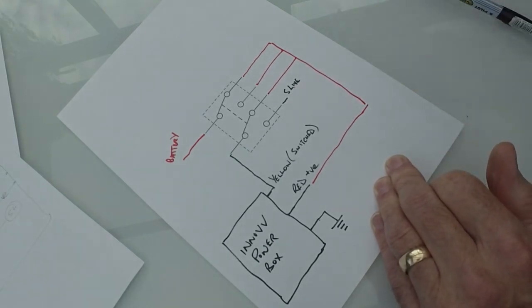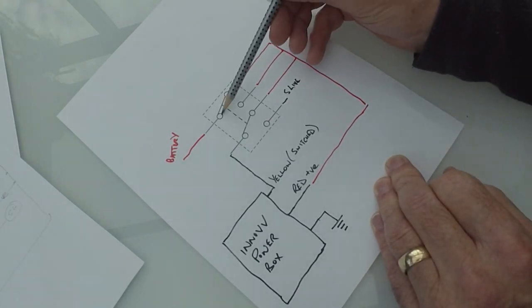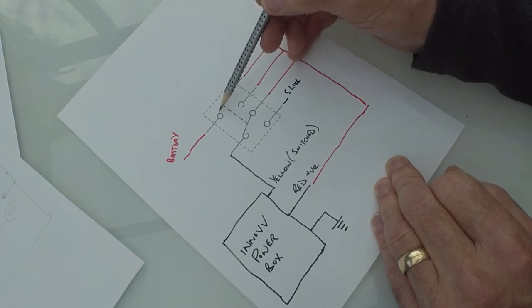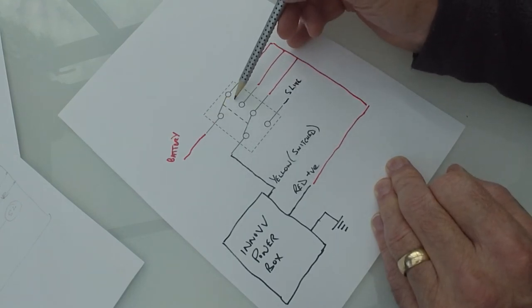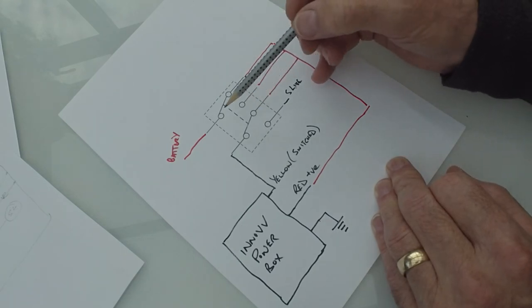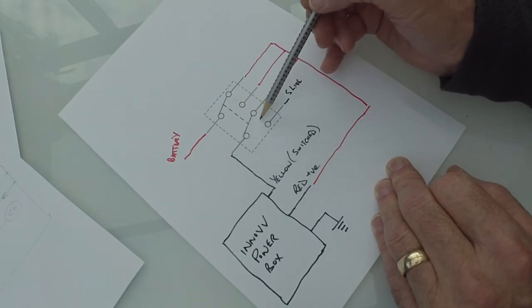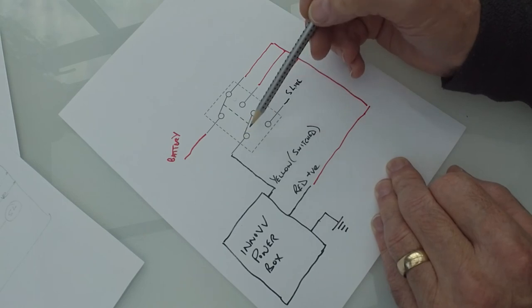So the situation then is that if you're in the center position, then this battery isn't connected to anything because it's floating in the middle here. This switch is also floating in the middle, so not connected to anything. So yellow isn't connected to anything.